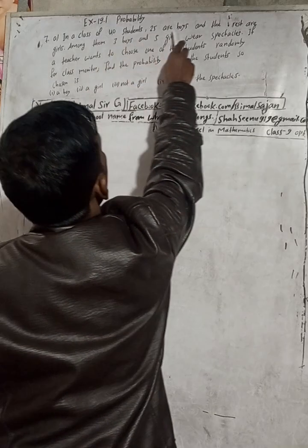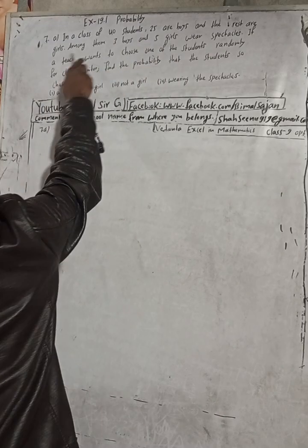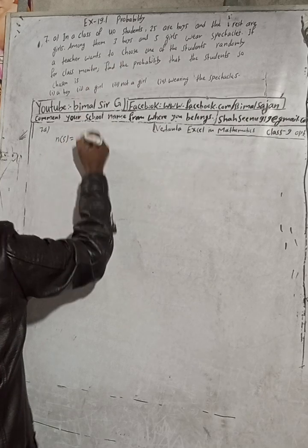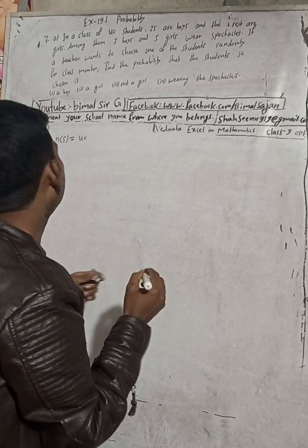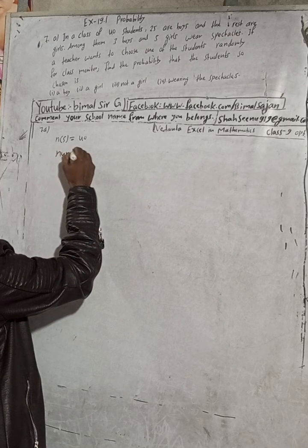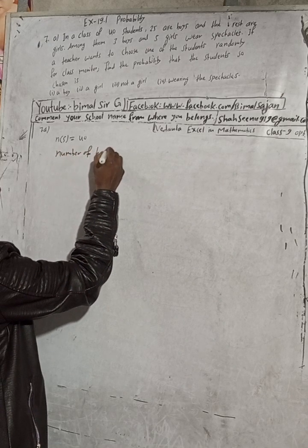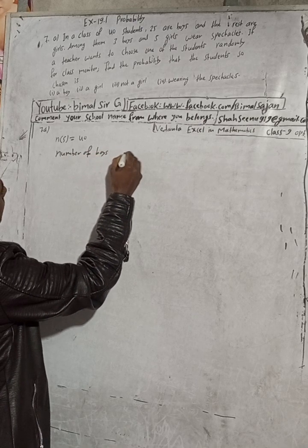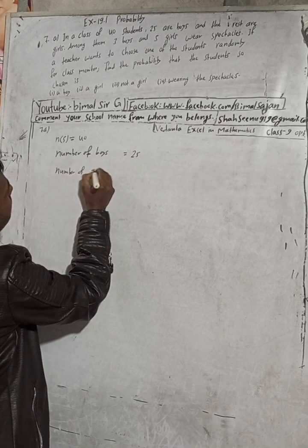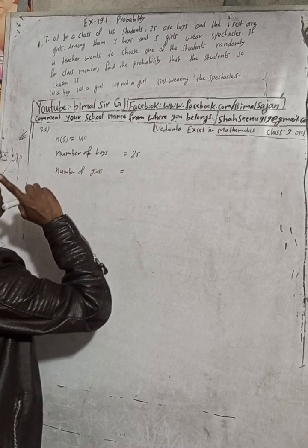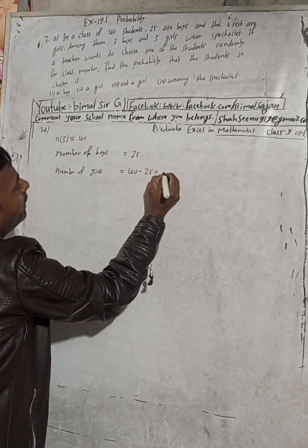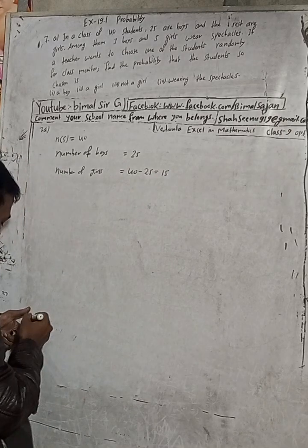The question is: in a class of 40 students, 25 are boys and the rest are girls. So the sample space is 40, because there are 40 students. Number of boys is 25. Girls means total 40 students minus 25, so the number of girls is 15.